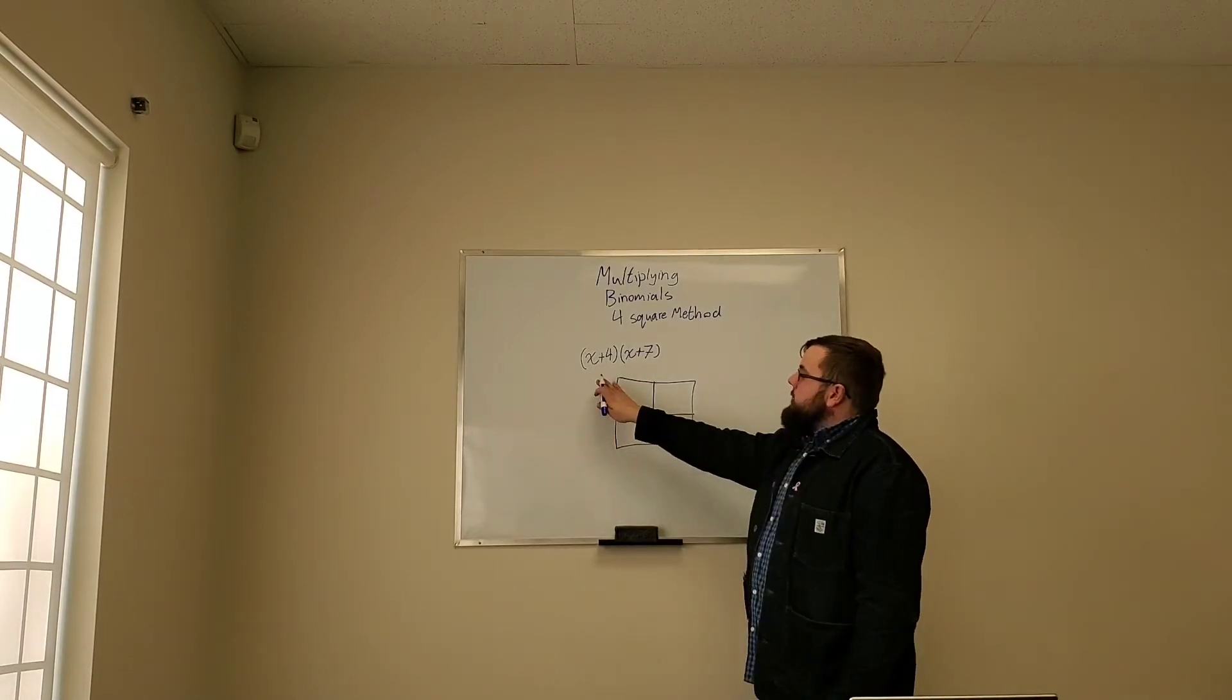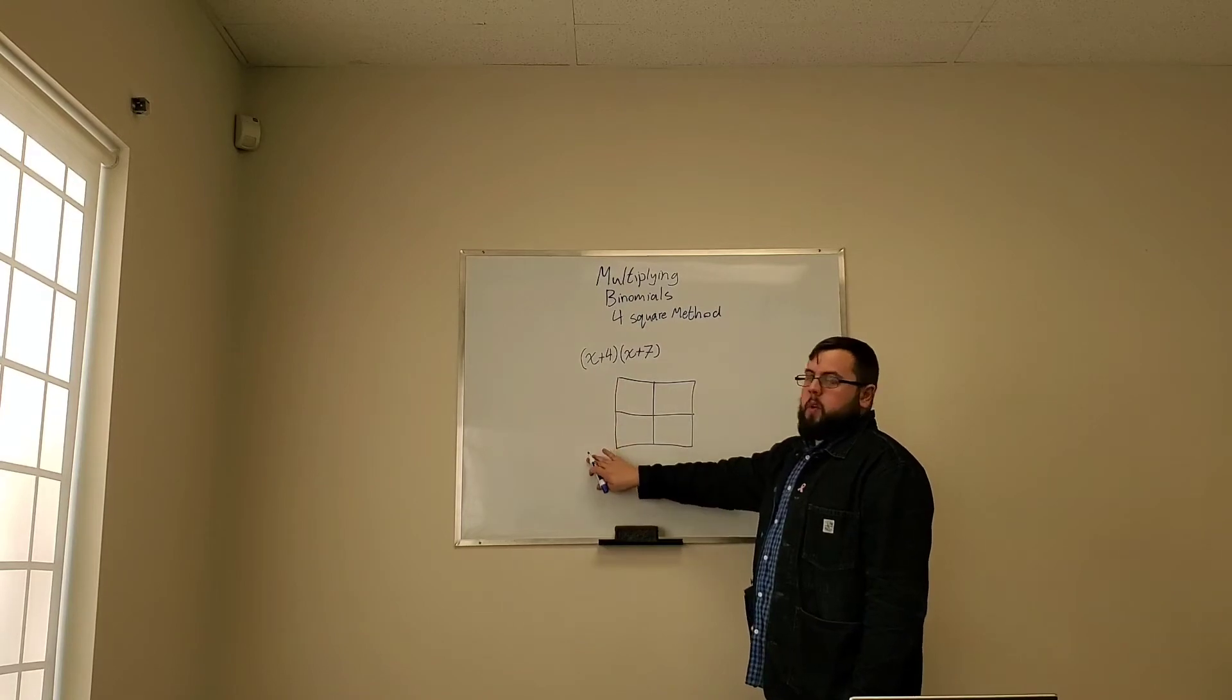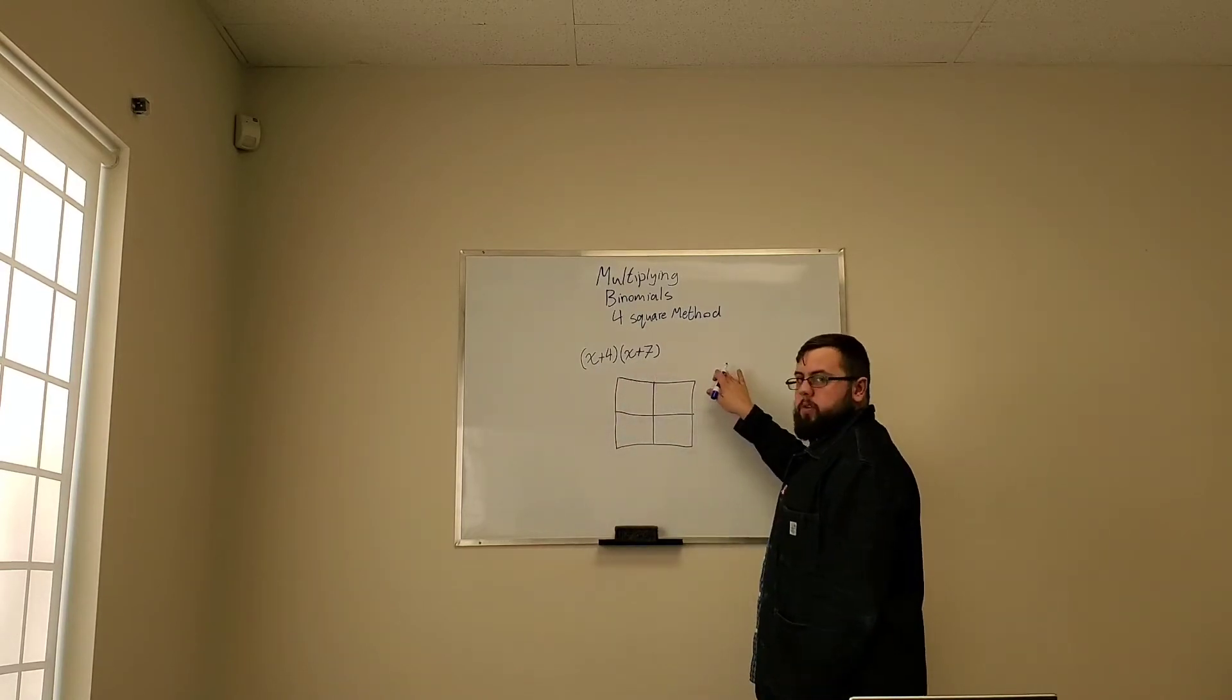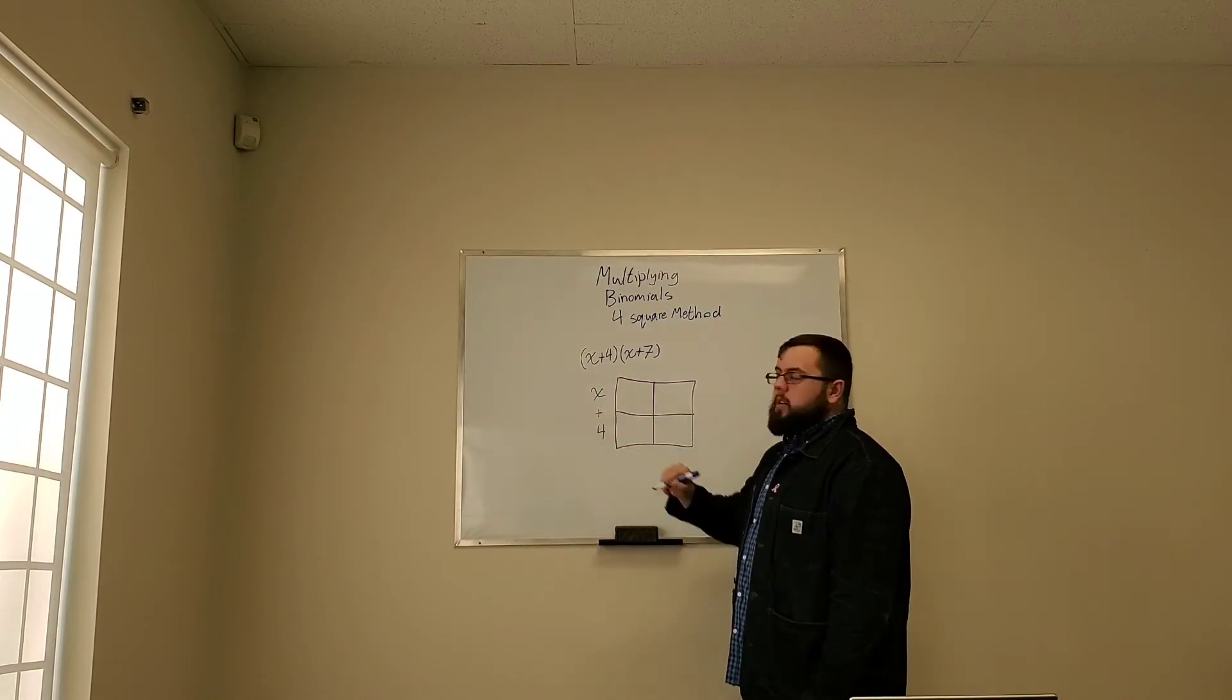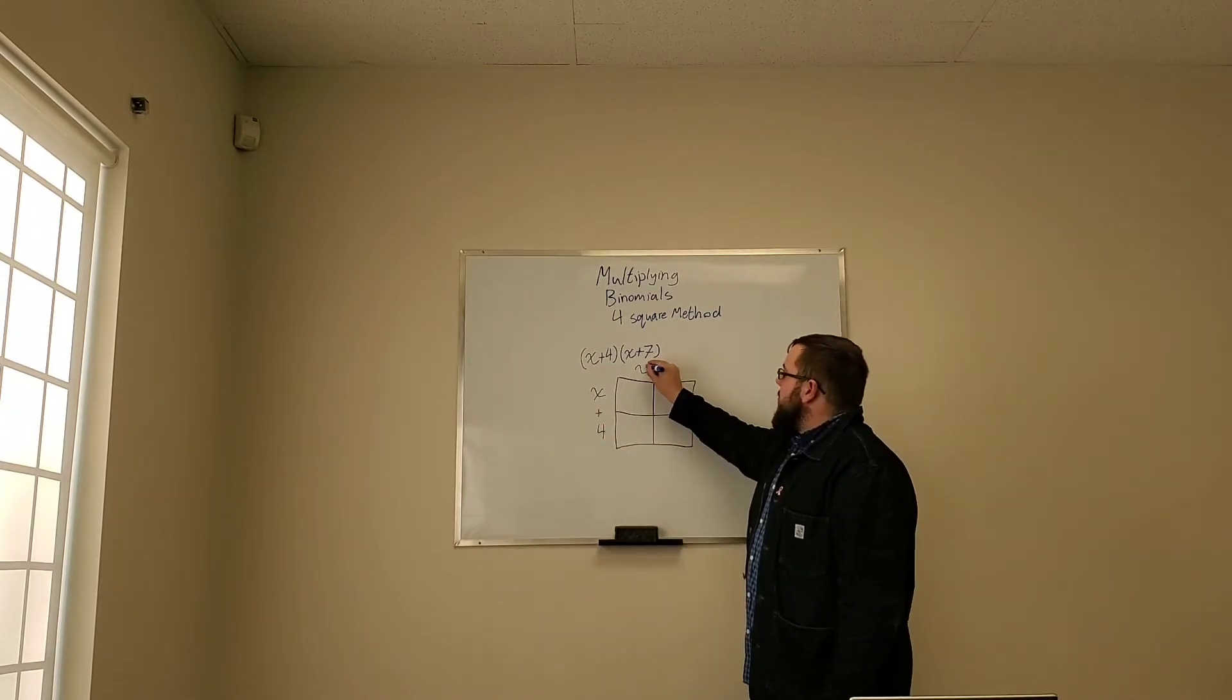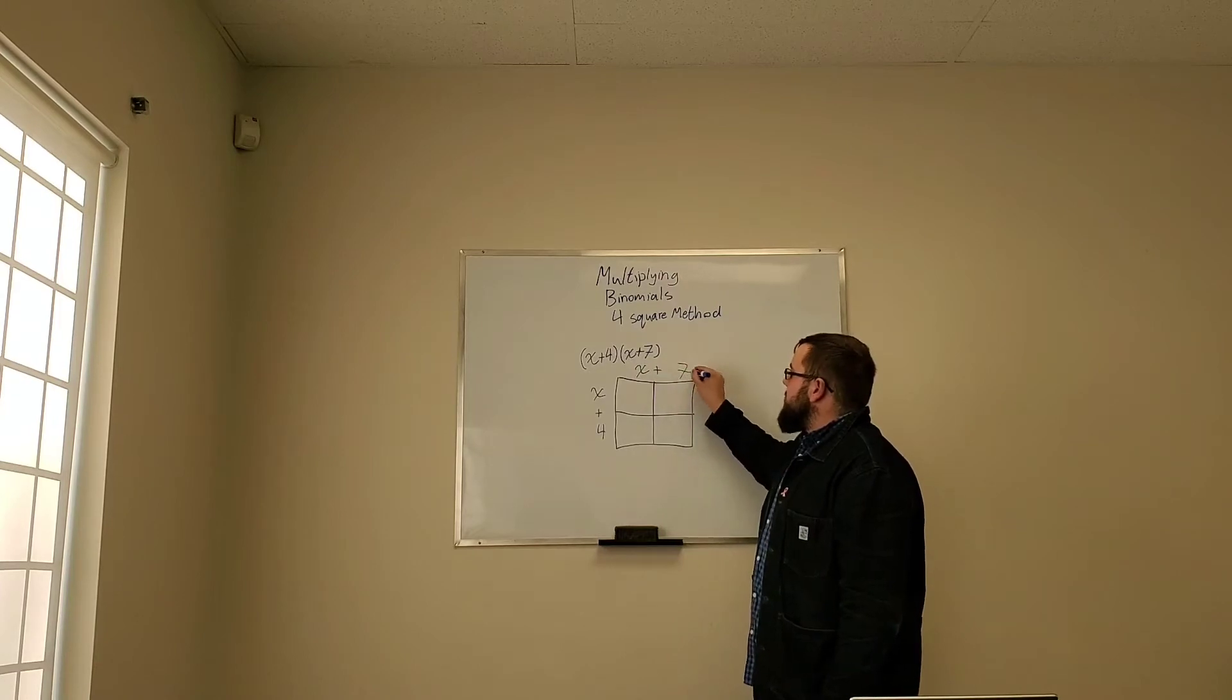The way that this works is we start by making four squares. Then we write one of our binomials on one side, one of our binomials on the other side. So we'll put x plus four here and x plus seven here.